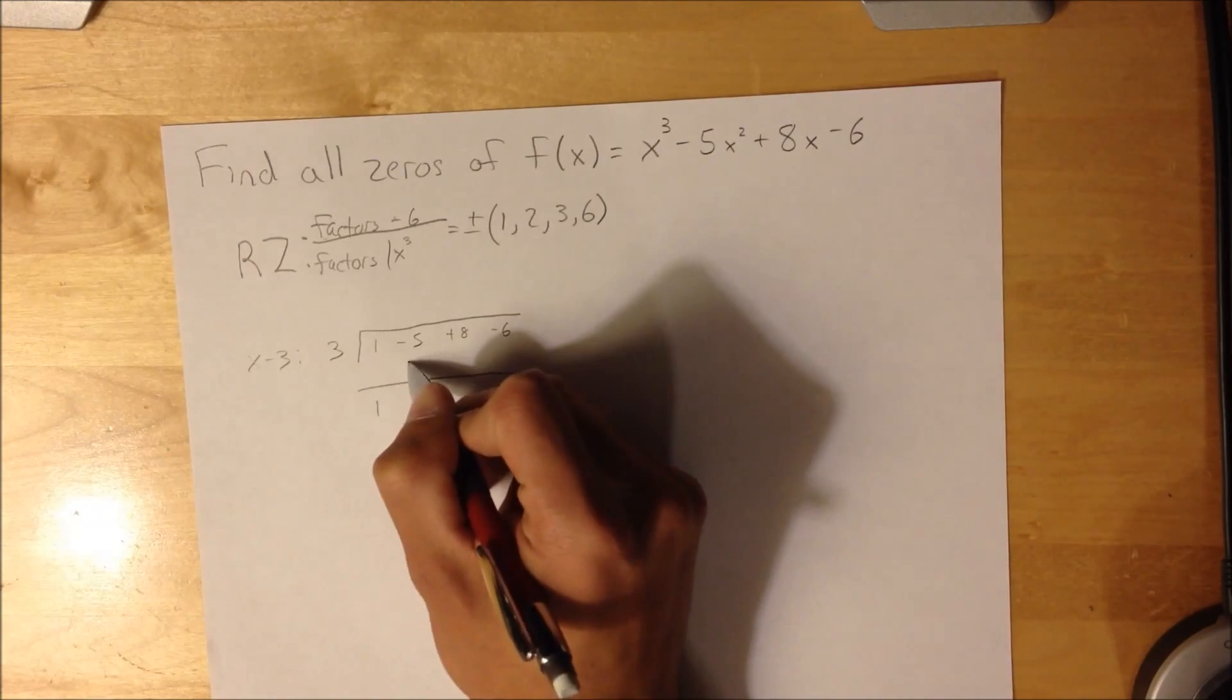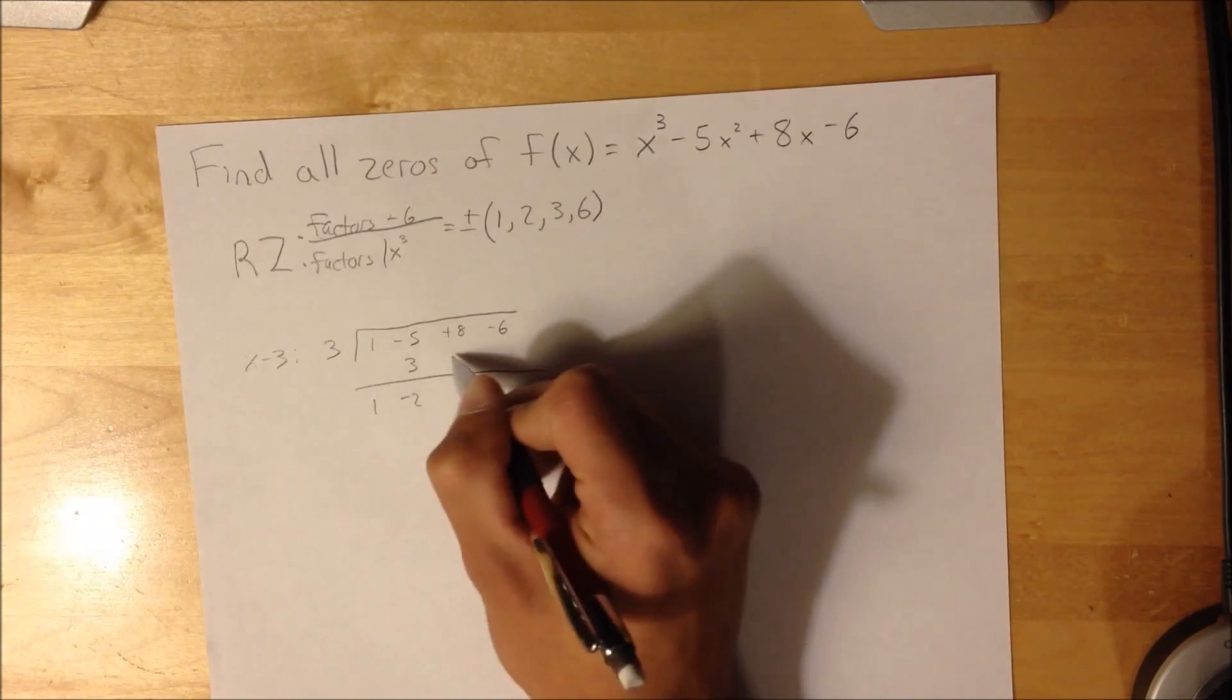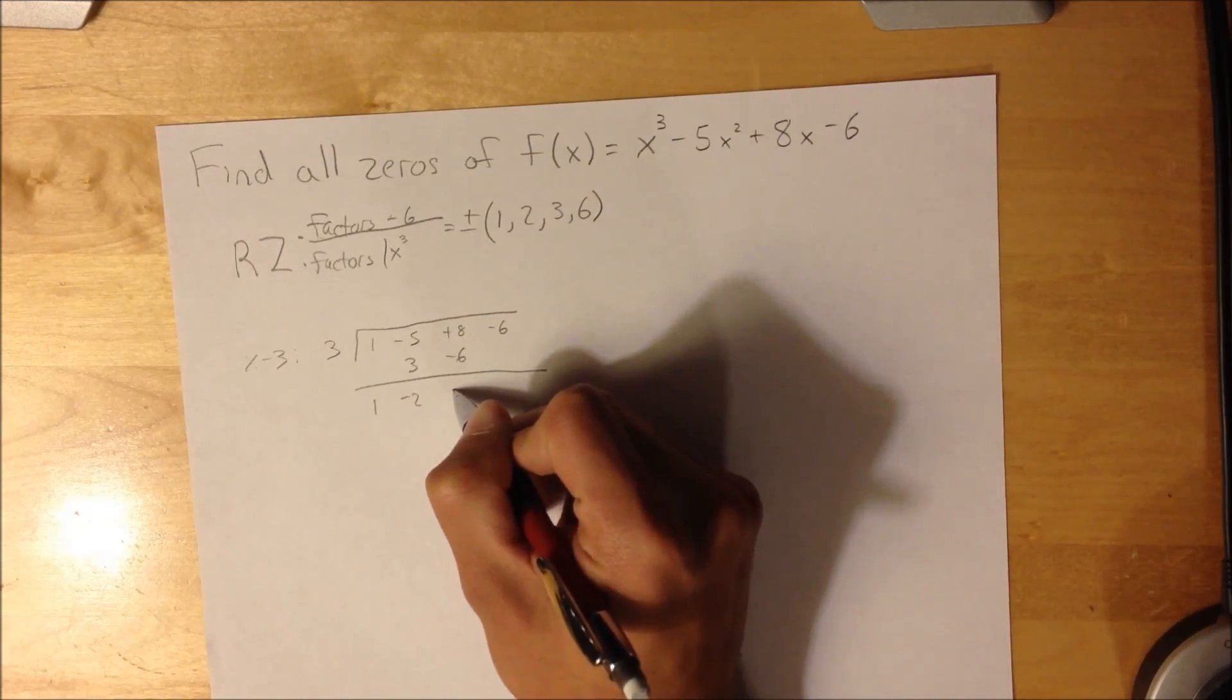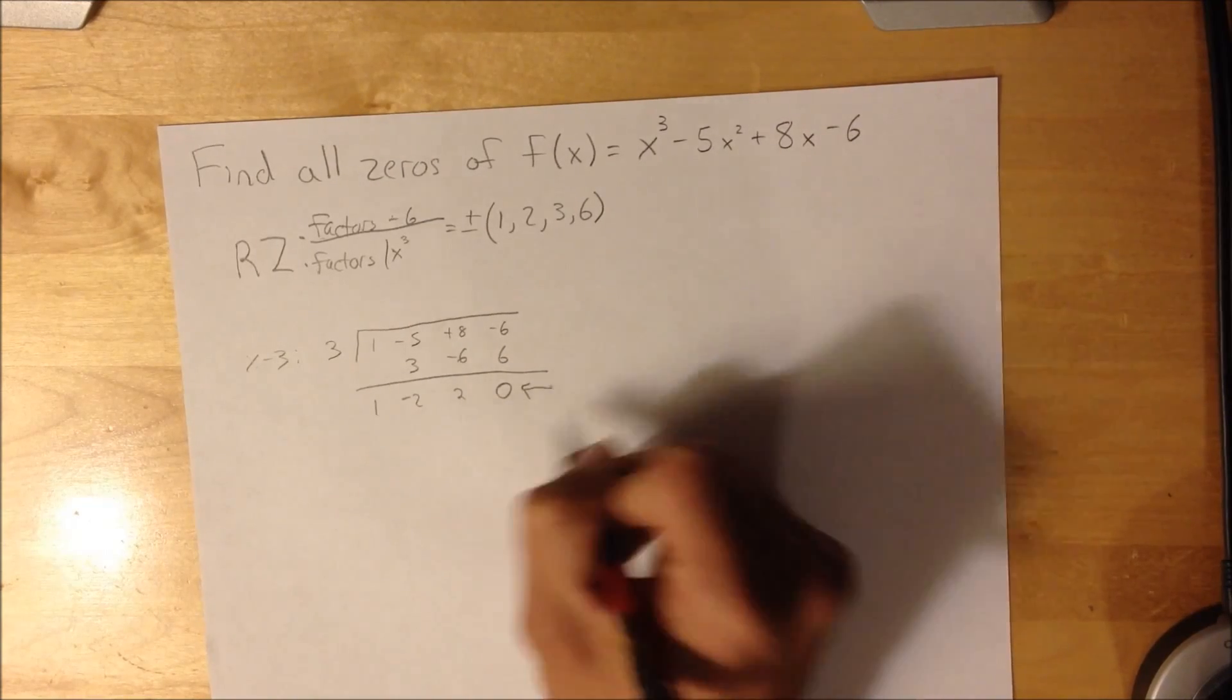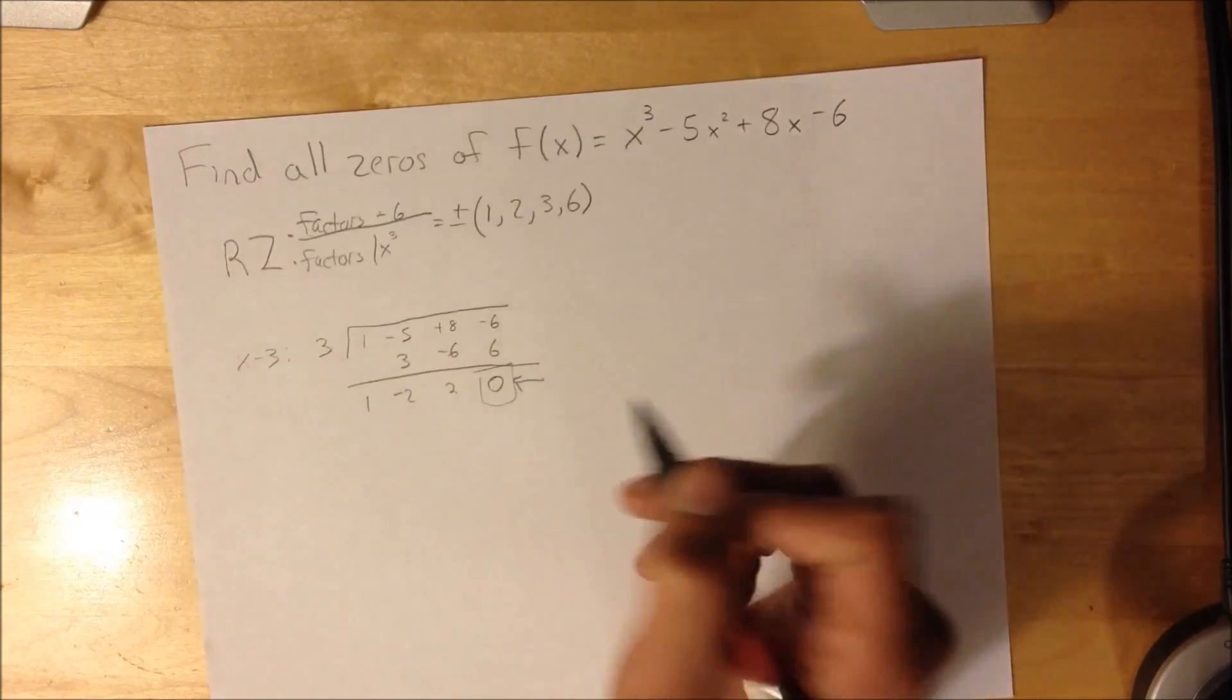Let's bring this down, -2, -6, 2, 6, and because the remainder is 0, it confirms that it is a factor.